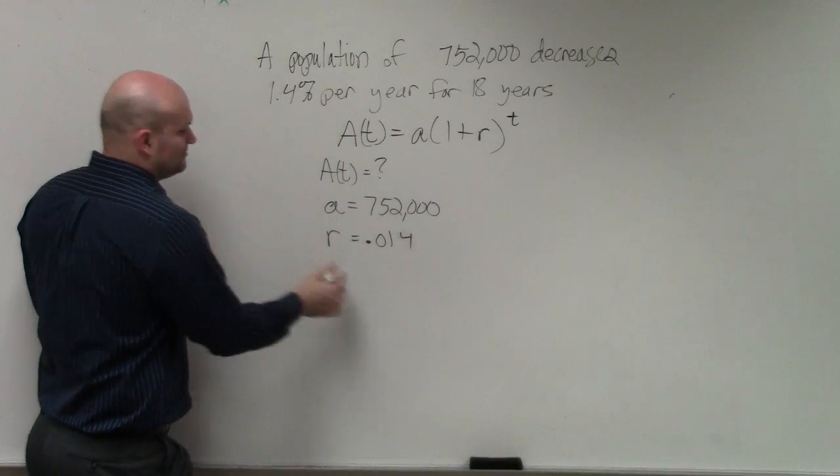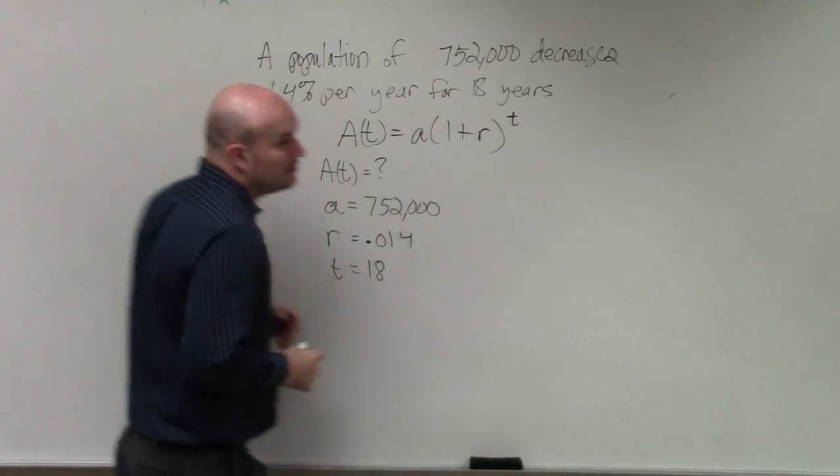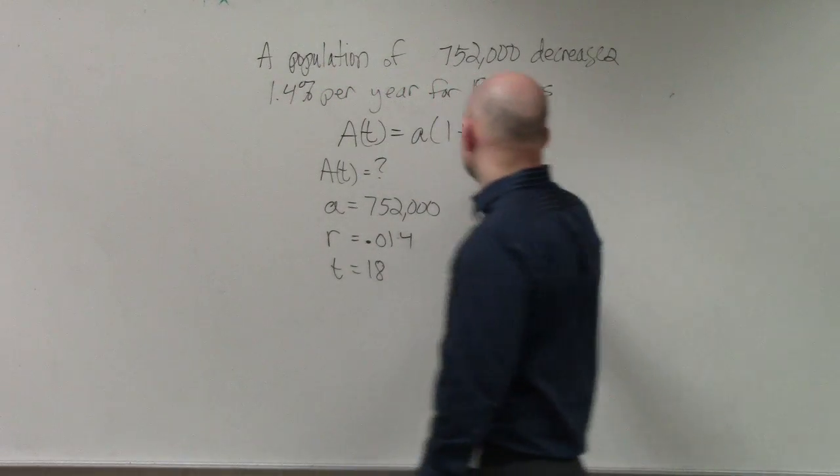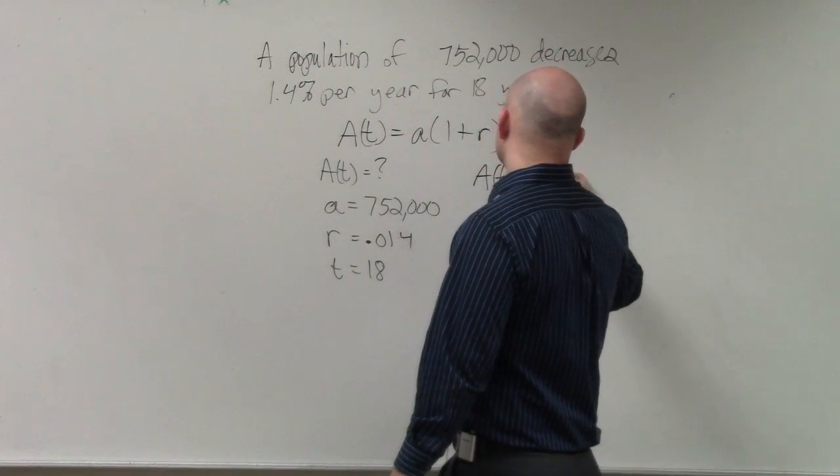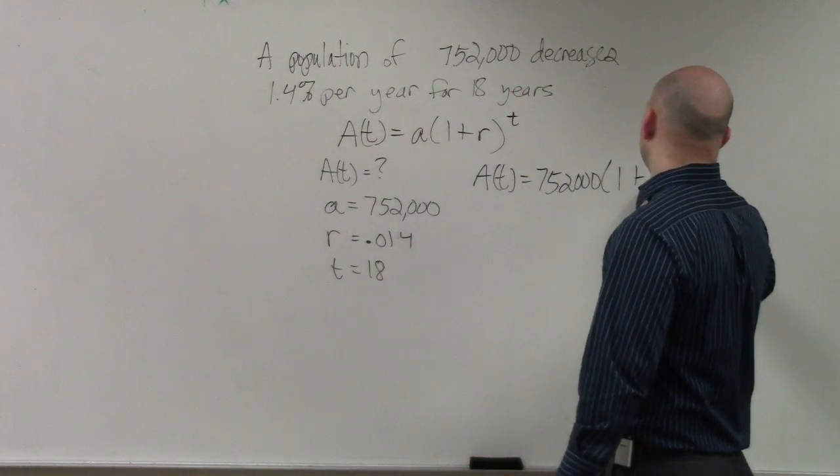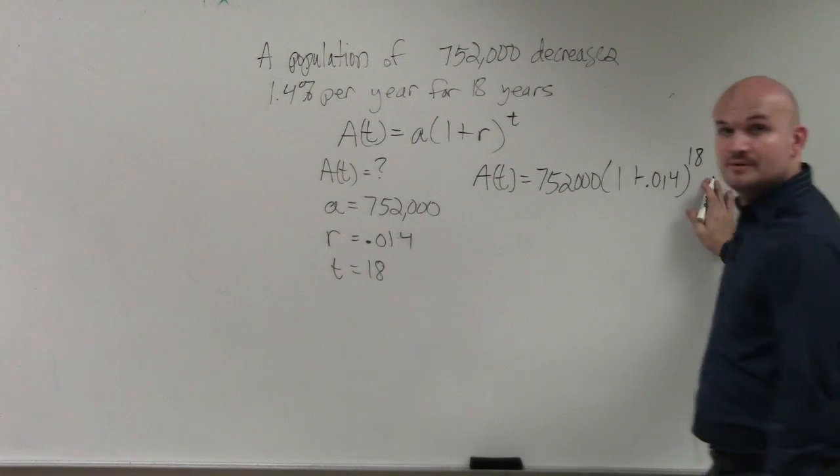And t equals 18 years. Does everybody see that? We just plugged in their information. So we have a(t) equals 752,000 times 1 plus 0.014 raised to the 18th power.